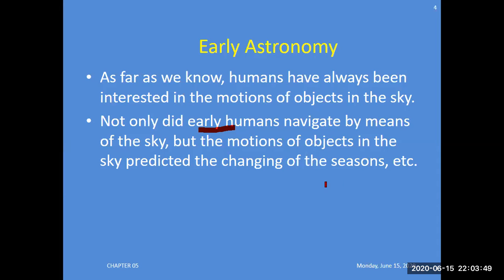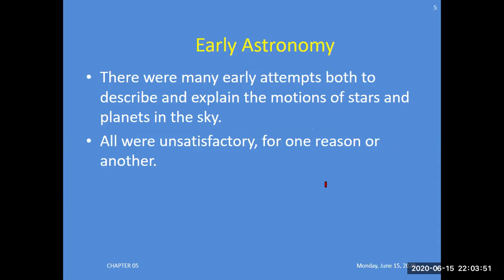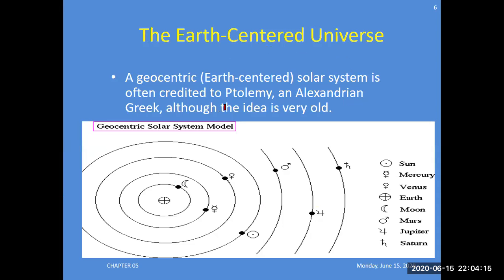This was early astronomy. There were many early attempts both to describe and explain the motion of stars and planets in the sky. All were unsatisfactory for one reason or another. They have not completely explained the whole process of the universe.